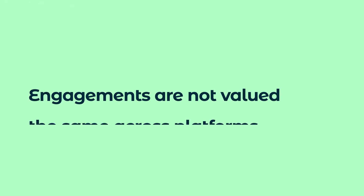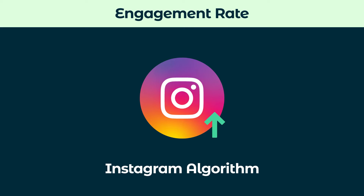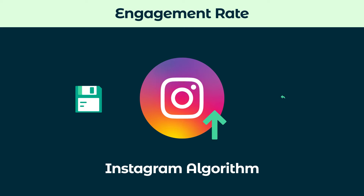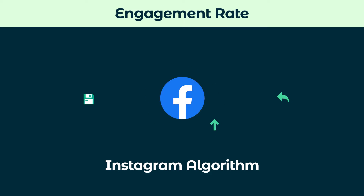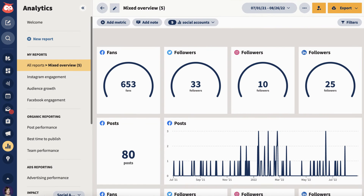Engagements are not valued the same across platforms. Instagram's algorithm prefers saves and shares, while Facebook favors comments. Keep this in mind when tracking this metric. Use a tool like Hootsuite Analytics to help you keep track of your engagement across all of your platforms.